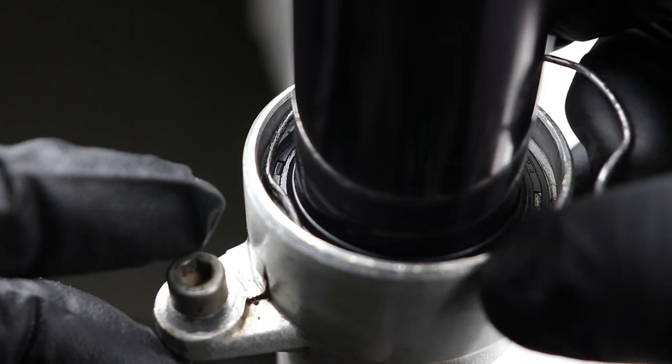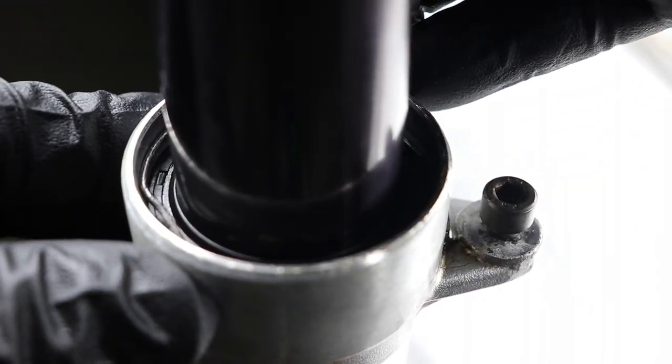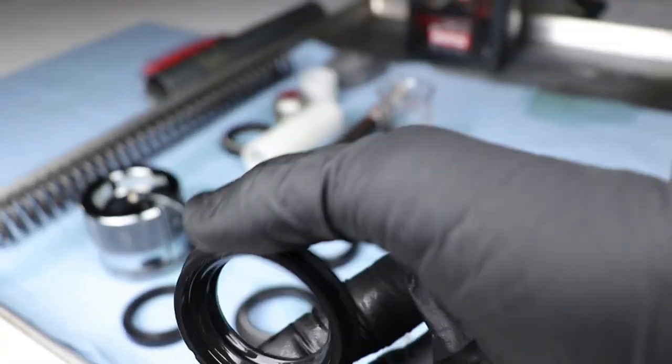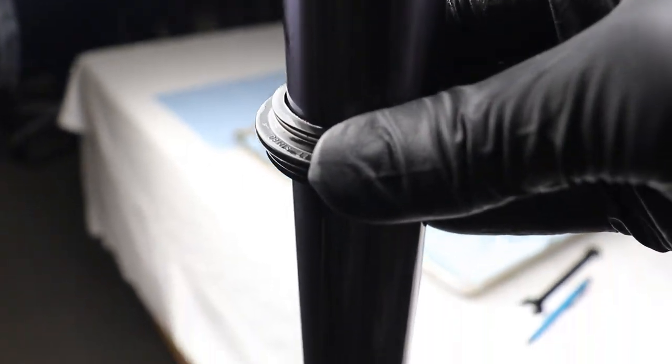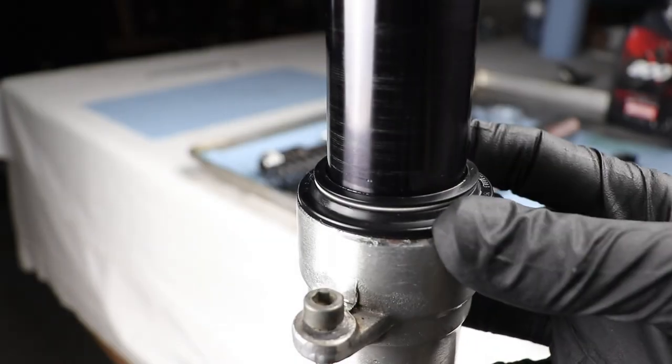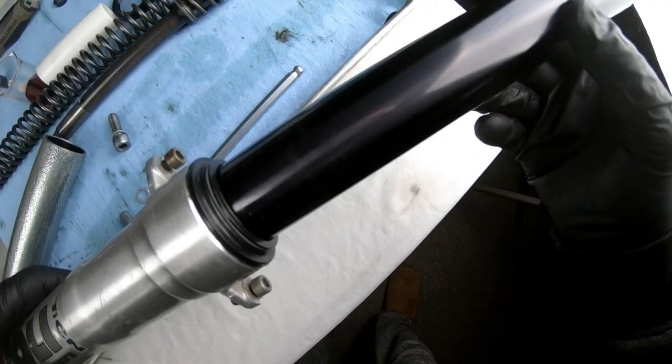All right, seal looks good, it's in place. Now grab that clip, just drop it in place, and all you got to do is force it into that little recess we showed you before. Perfect. And grab your dust seal, drop that in place. You can give it a little lube and slide it in place. Perfect, nice.